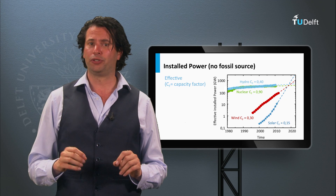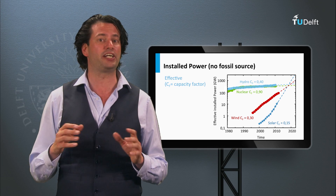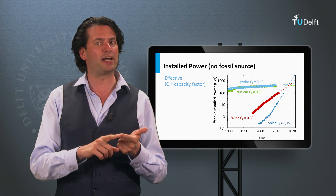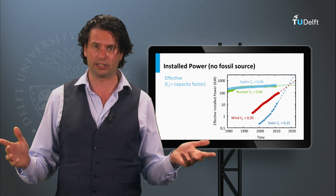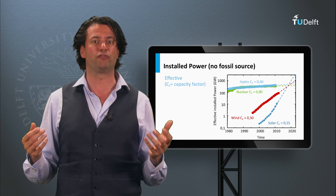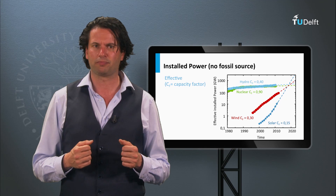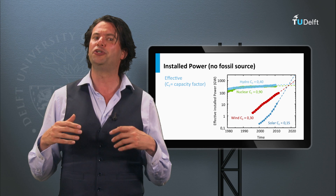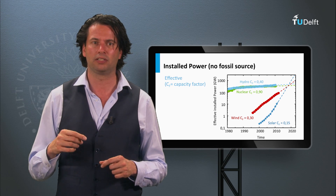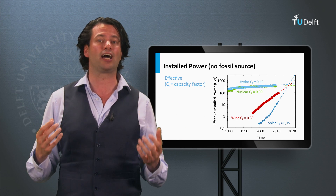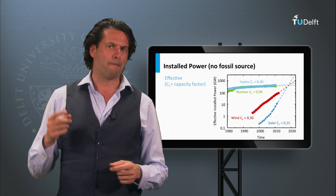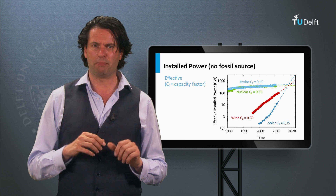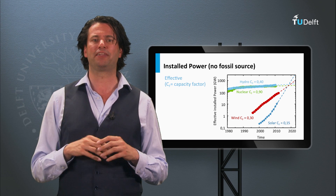Secondly, hydro, nuclear and wind are centralized electricity generation concepts — you need a big dam, a big nuclear plant or a wind park to generate electricity. Building these large systems requires governmental involvement and big investors. PV systems can be installed centralized in large solar farms too, but the unique advantage is that PV systems can also be installed decentralized. Many consumers of electricity can put their own PV system on their home and become their own producer, independent of the market.